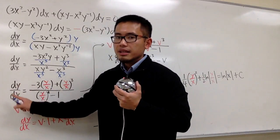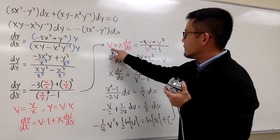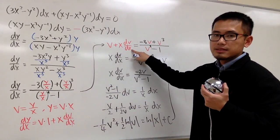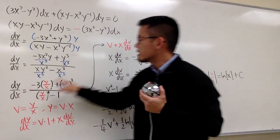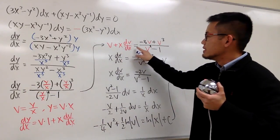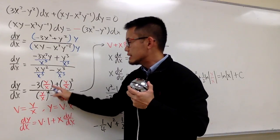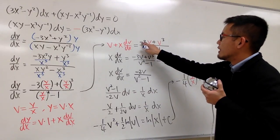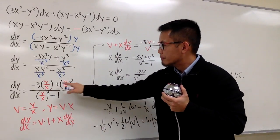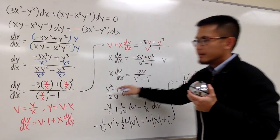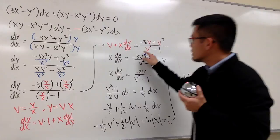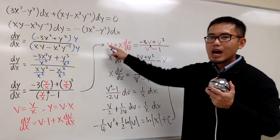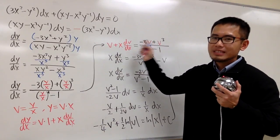Now we substitute these into the differential equation. On the left-hand side, instead of dy/dx we have v plus x(dv/dx). On the right-hand side, every y/x input becomes v, so we have negative 3v plus v³, all over v² minus 1. This substitution is guaranteed to make the equation separable.